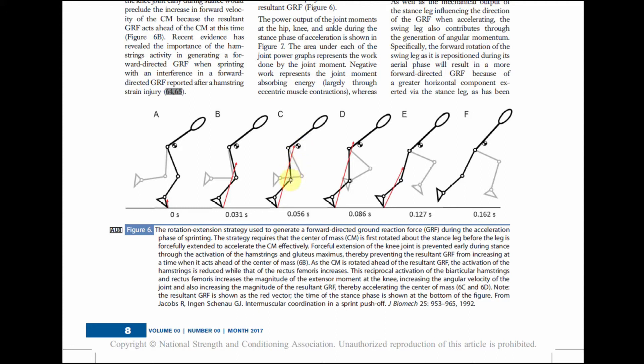The other thing that contributes to this forward-directed force is the forward rotation of the swing leg. We've got two things going on: the rotation extension strategy and the forward rotation of the contralateral swing leg to produce these forward-directed forces.